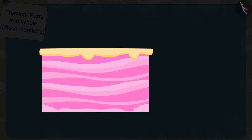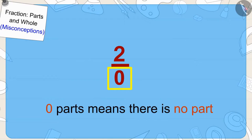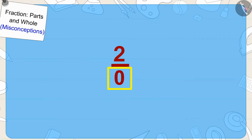Like, if we have this cake, we can write it as one upon one. Meaning, this whole cake is one part, and we are taking that whole portion. And zero parts means there is no part. And when there is no part, then how can we take two parts from it?